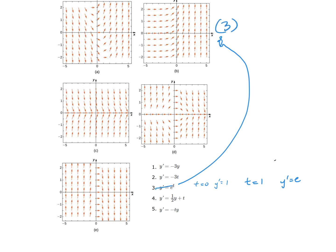For equation 2, which is also only in terms of t, when t equals 0 I get y prime equals 0. That narrows it to two candidates. When t equals 1, I get y prime equals negative 3—a negative value. Since one of the remaining graphs shows a positive value at t equals 1, equation 2 must be graph e.